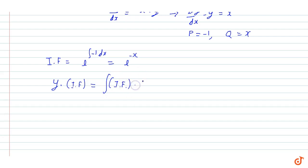So y times e to the power minus x equals integration of x times e to the power minus x dx. We know we can't integrate it directly, so we will use by parts for this.